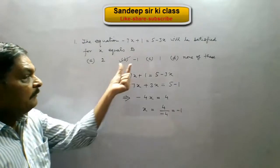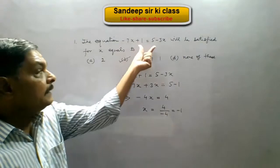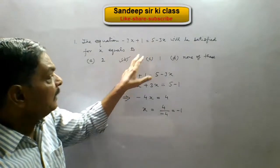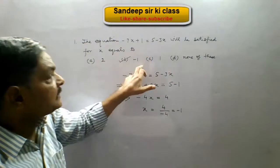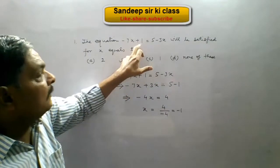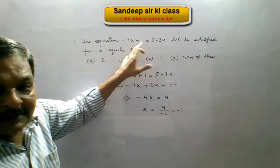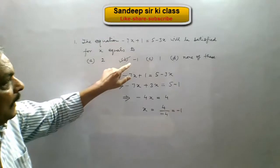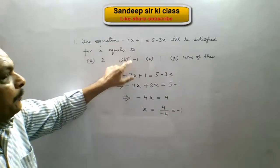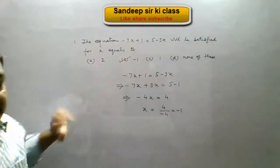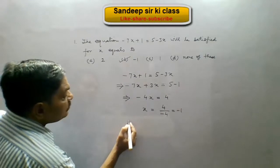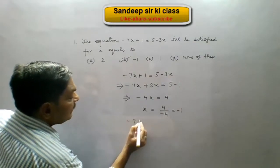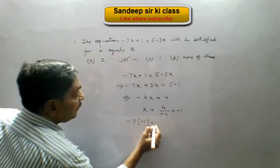The value of x will be minus 1 when this equation is satisfied. Another way of solving the problem is to put the options into the equation — when the equation is satisfied, that option is the correct option. So in place of x we put minus 1 in the given equation.